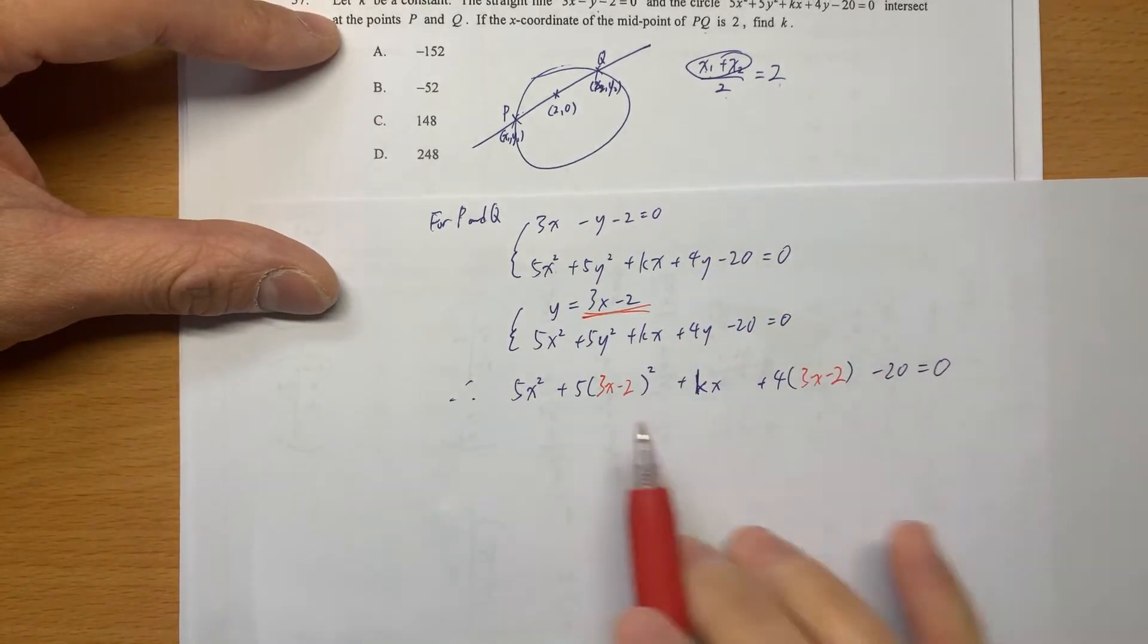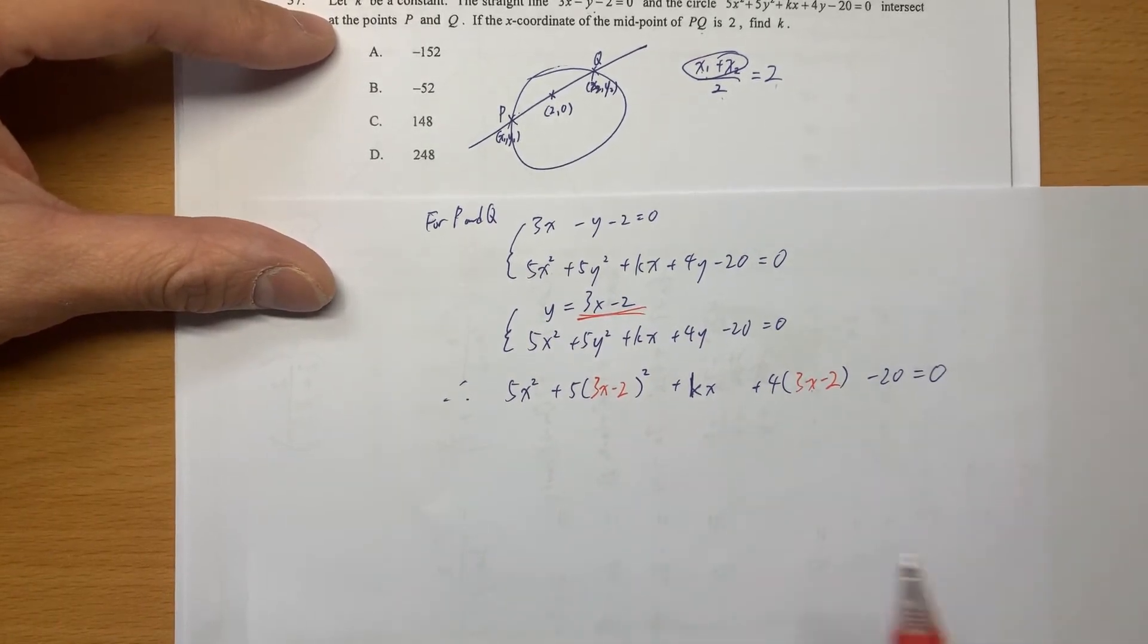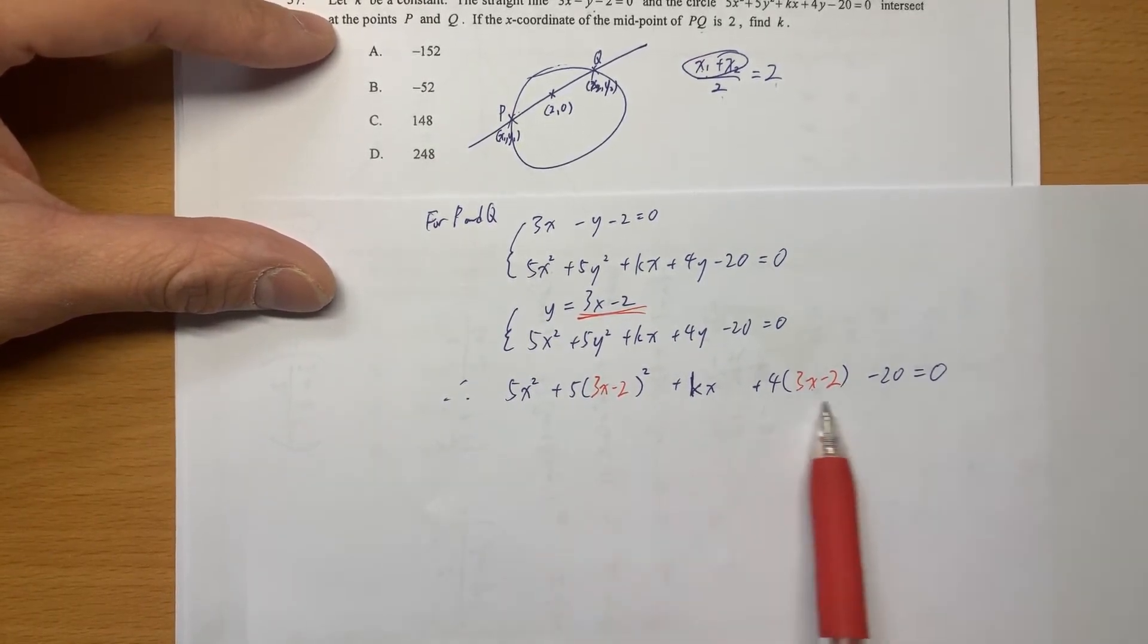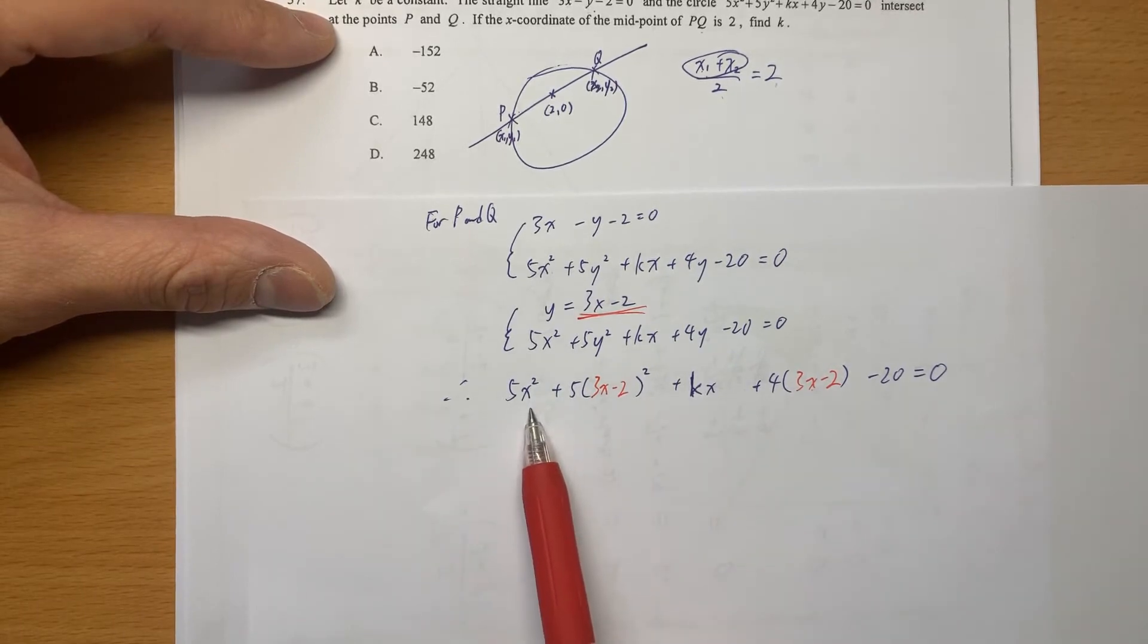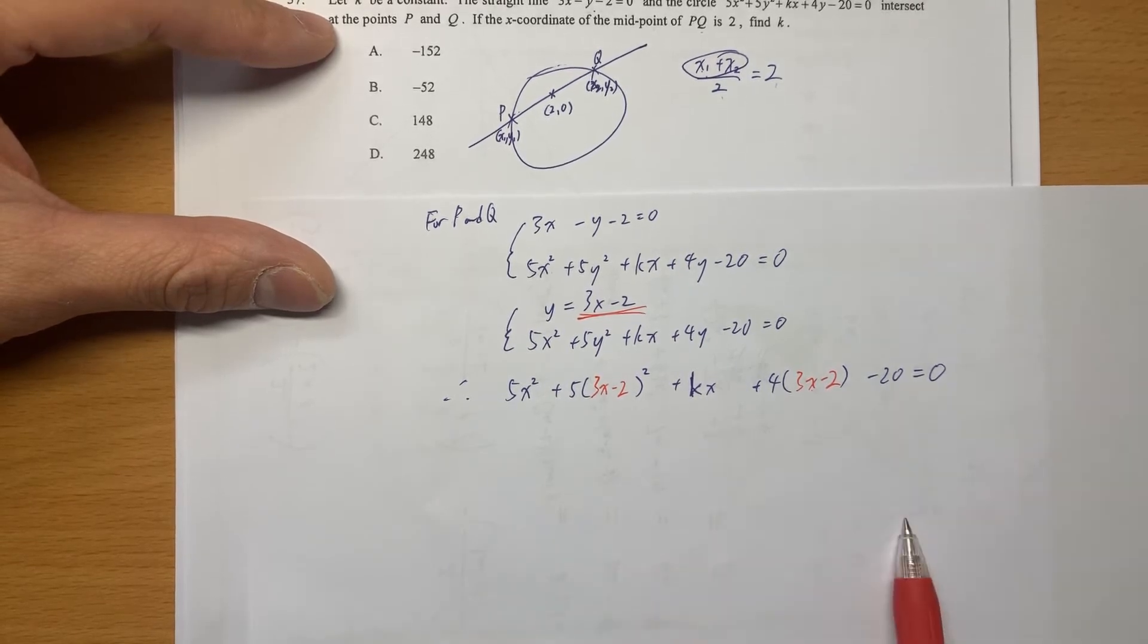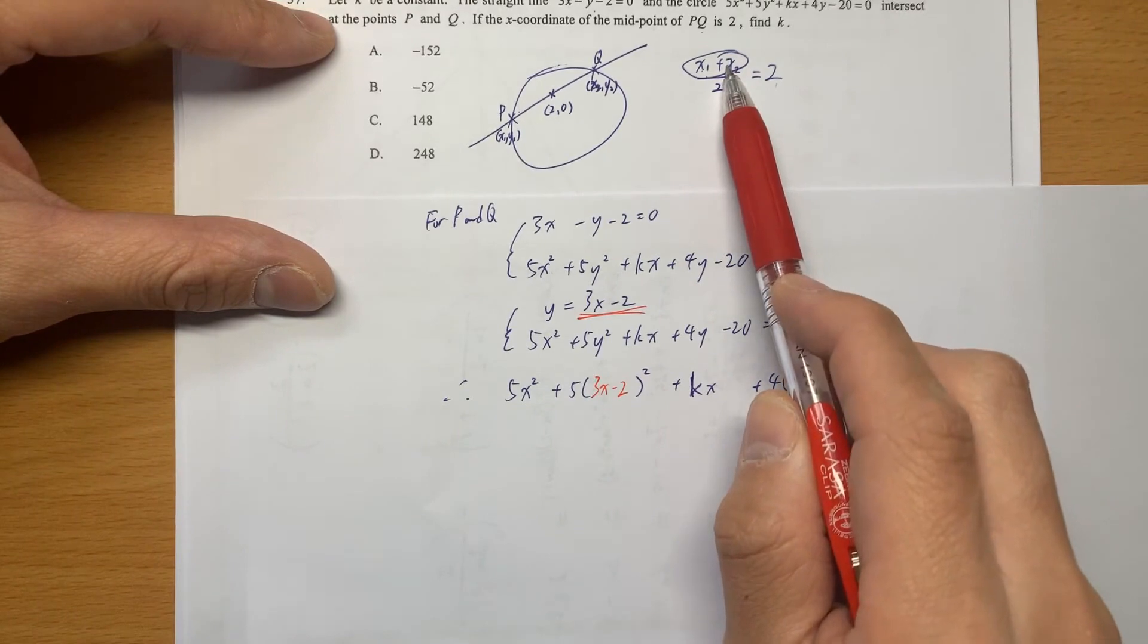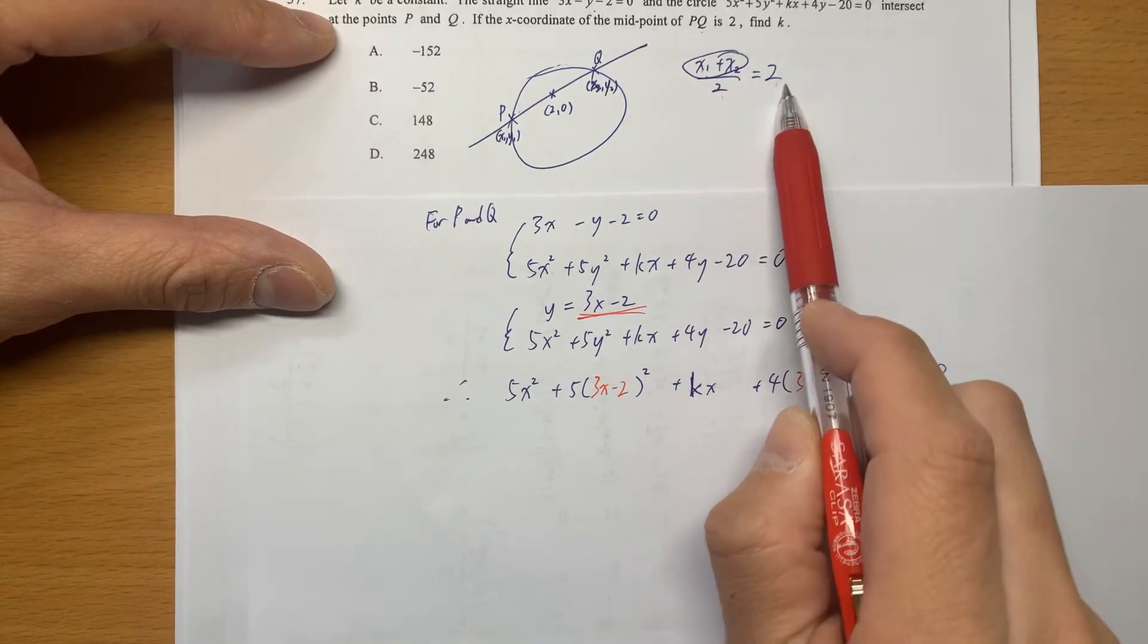After substitution, only x as the only variable. And then we are going to simplify it. And then we expect we will have some quadratic equations with how many x squared plus how many x plus how many equal to 0. Then we can apply the sum of roots divided by 2 is 0.